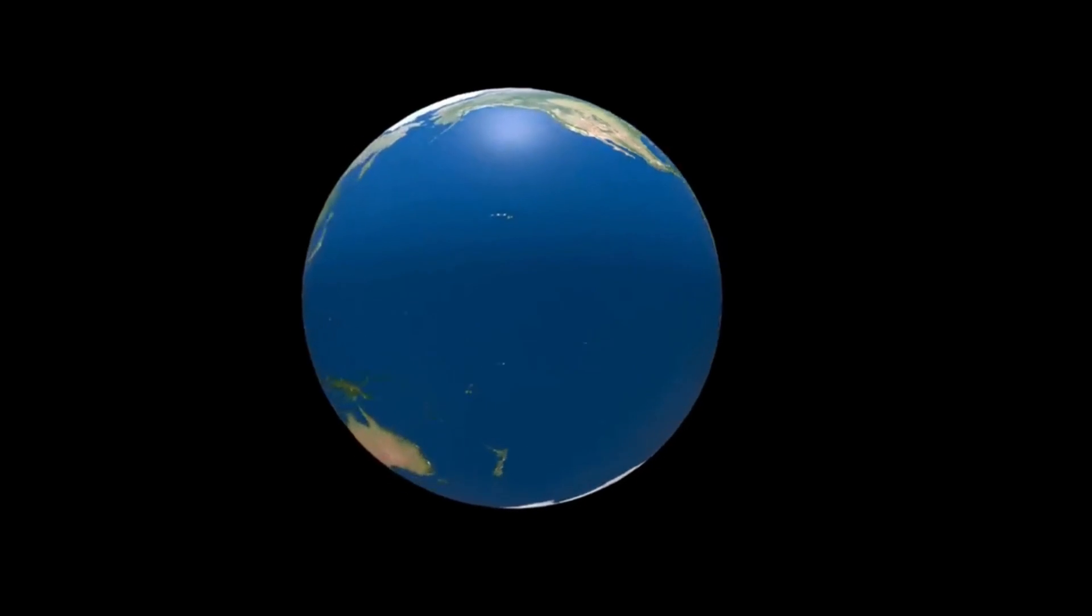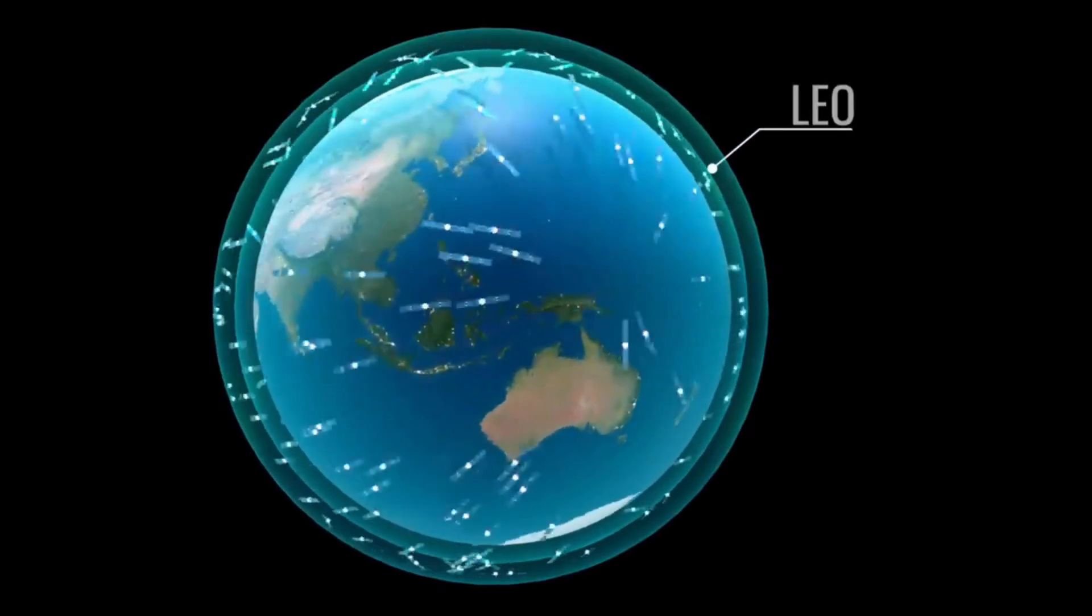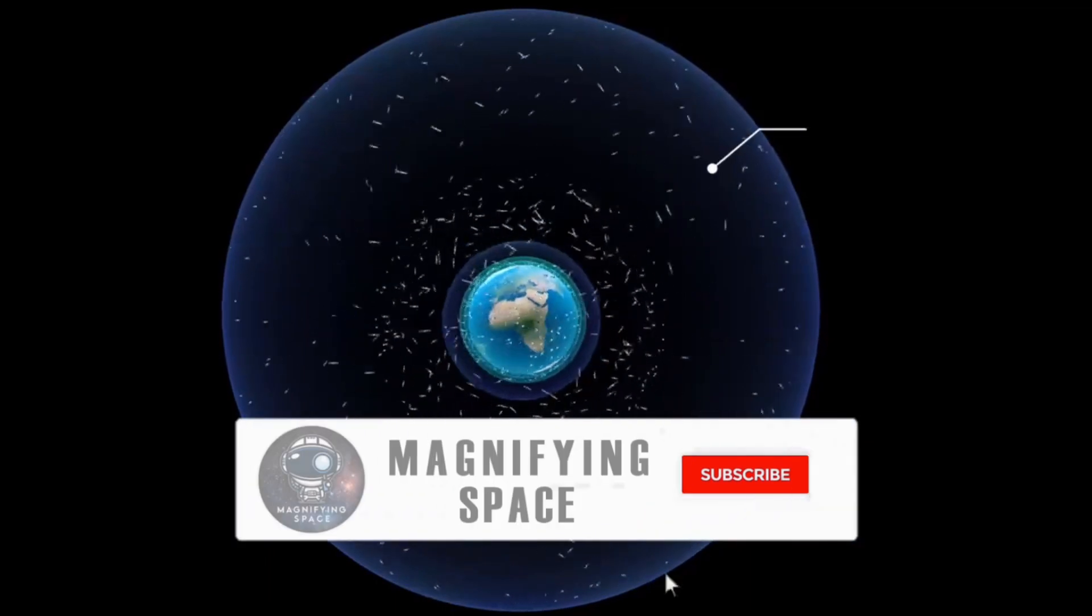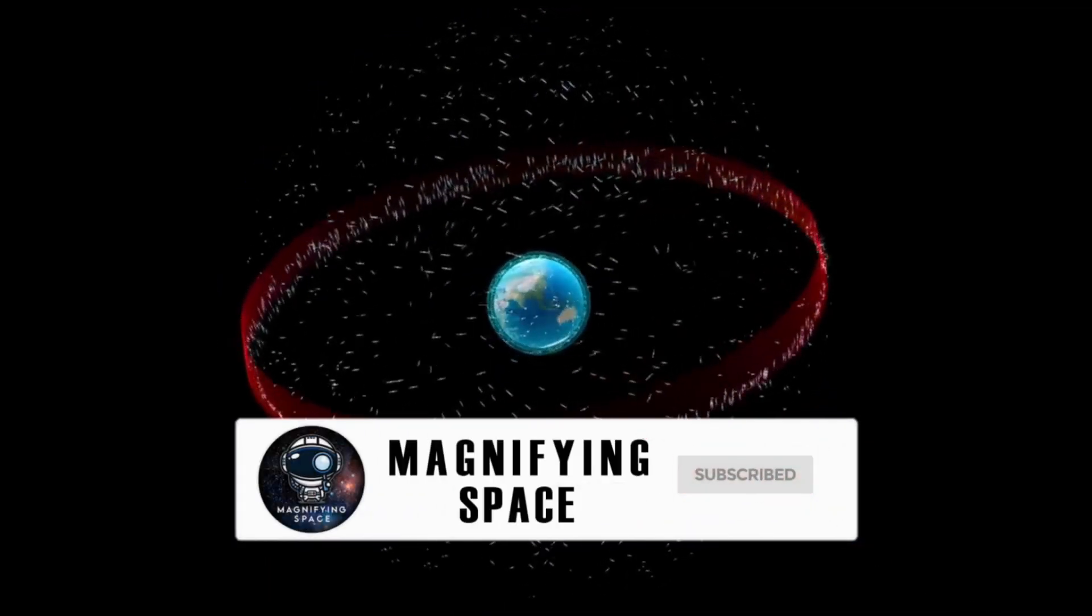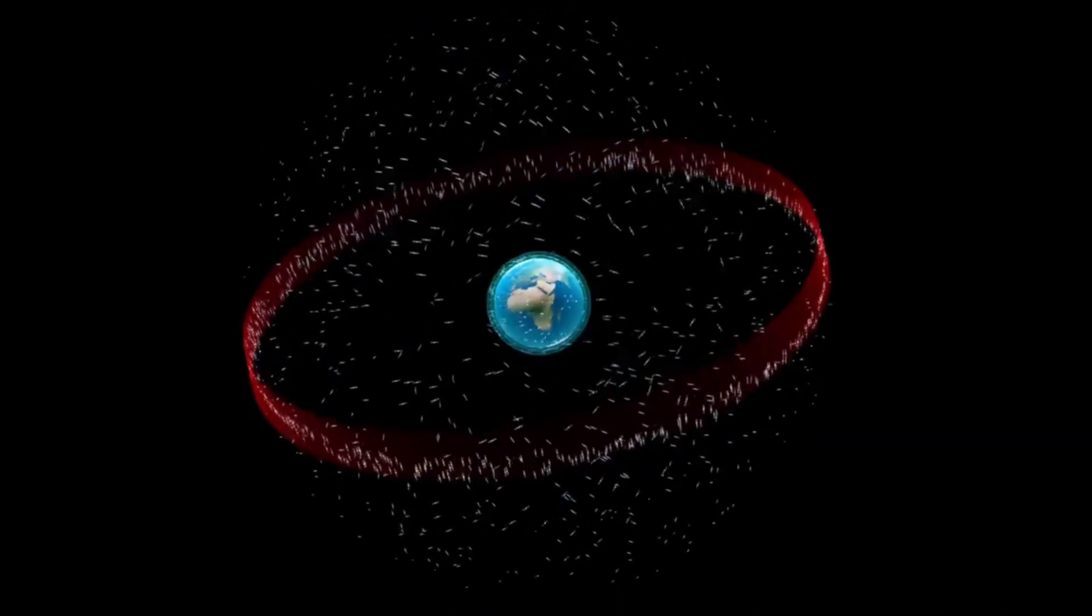But apparently doing this might not even be enough to solve all the problems that come with having mega constellations of satellites in space. One critical problem of hosting too many satellites in orbit is that they interfere with radio communication and the sensitivity of telescopes. So even if we devise a plan to make them invisible to the human eye, they will still be visible to powerful telescopes.